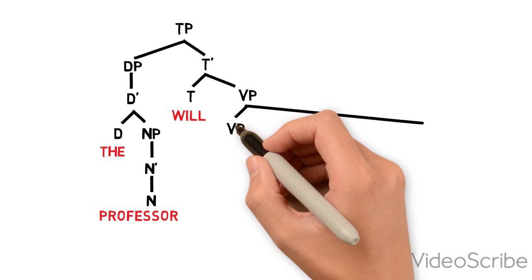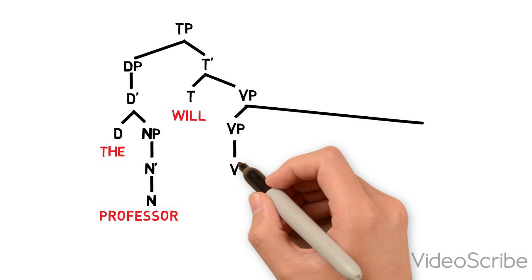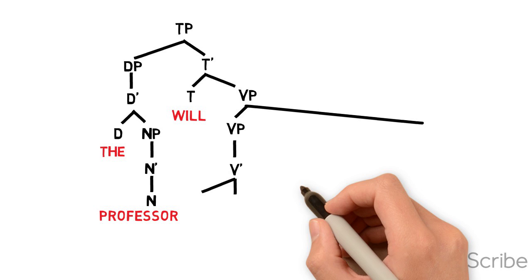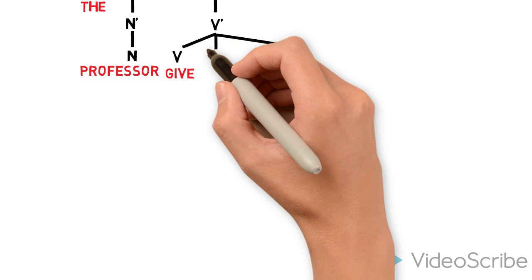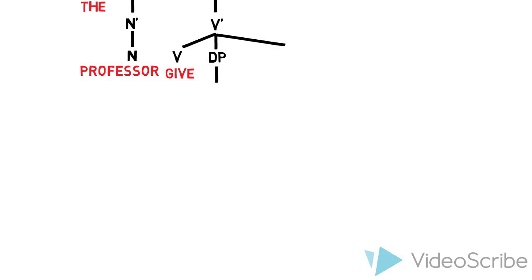The VP, as you remember, has an adjunct which we will draw later, but leave a space for. The V-bar will have three branches: the verb give, the indirect object, and the direct object.